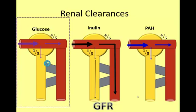Glucose is a monosaccharide with a molecular weight of 180. Like inulin, glucose is freely filtered at the glomerulus and one-fifth of the glucose passes into the tubule. However, at low concentrations, the entire filtered load of glucose is reabsorbed into the peritubular capillaries.